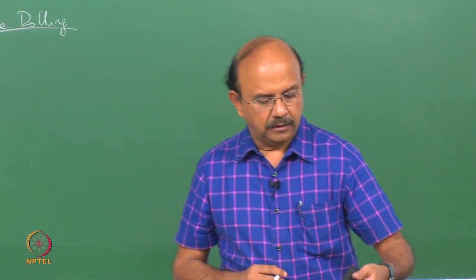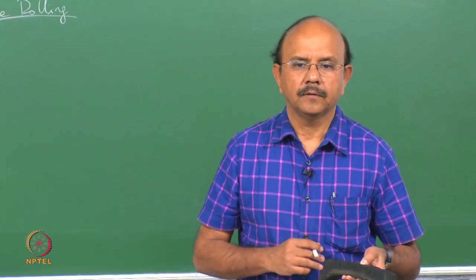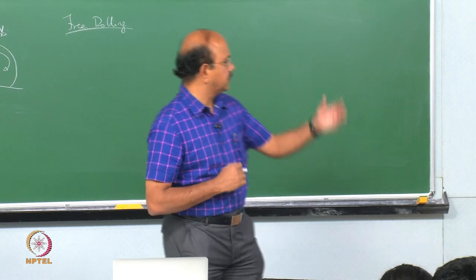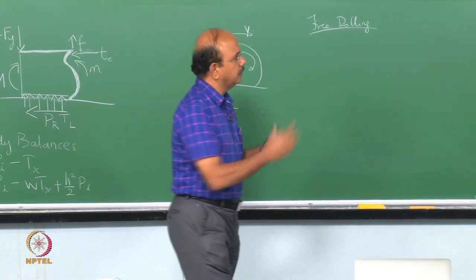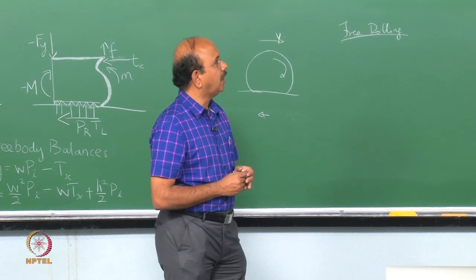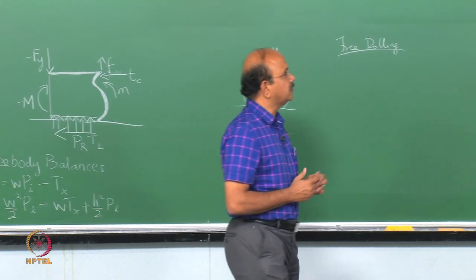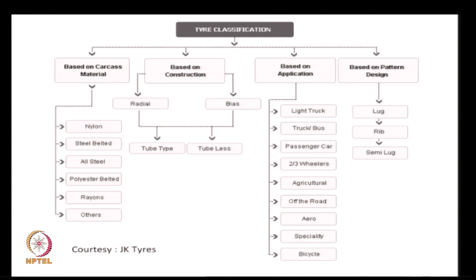Nevertheless, it is important that we talk about the construction of the tyre. Courtesy JK Tyres, I am giving you the slide which talks about how tyres can be classified. Tyres are classified based on construction into what we call as radial tyre or a bias tyre. Today, radial tyres have become extremely popular and all passenger car tyres are radial tyres.